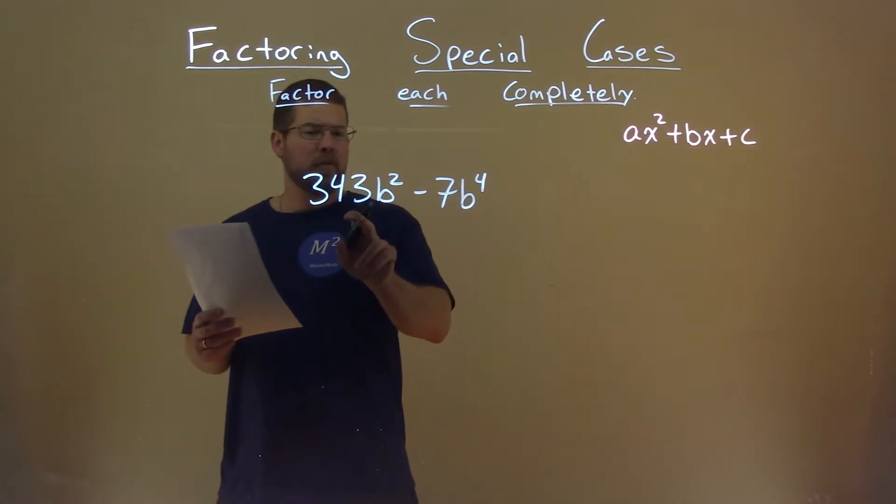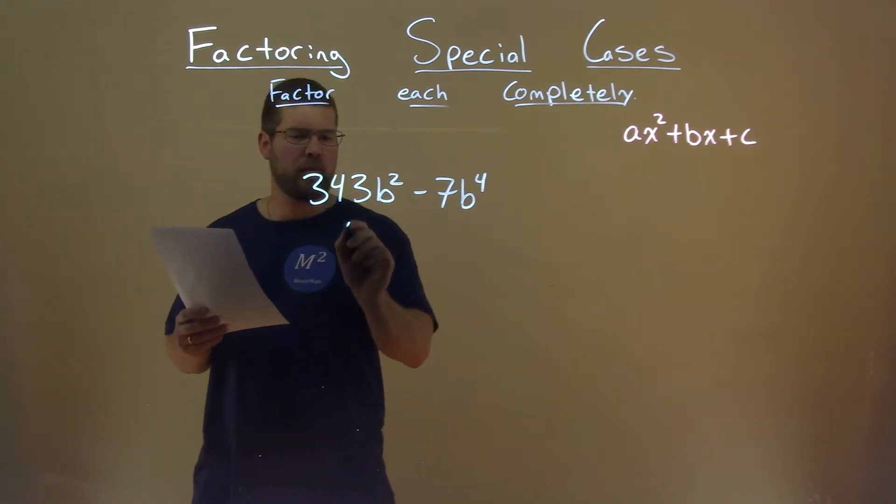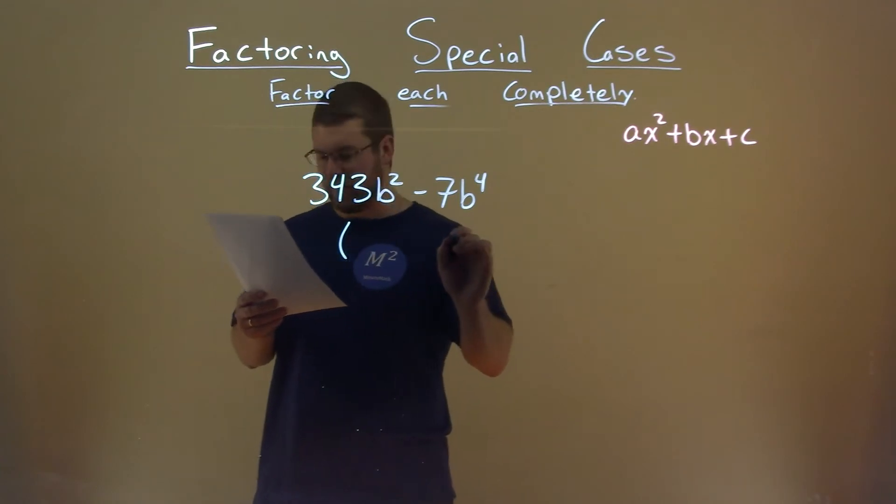All right, we see 343 and 7, and I can pull out a common factor, right? I can pull out a 7 there from both of them, so I'm going to do that to help make this a little easier.